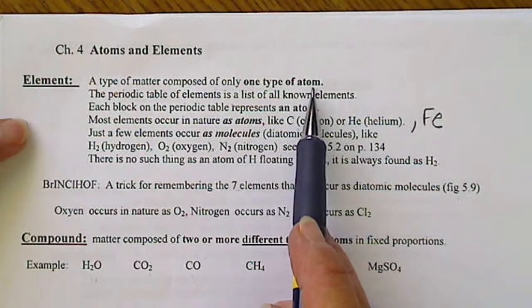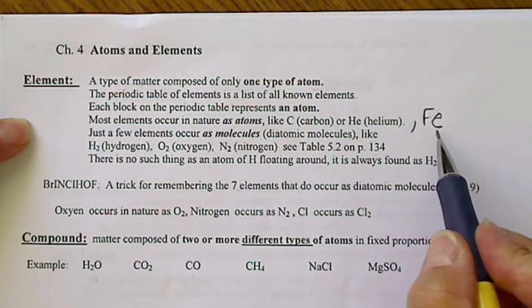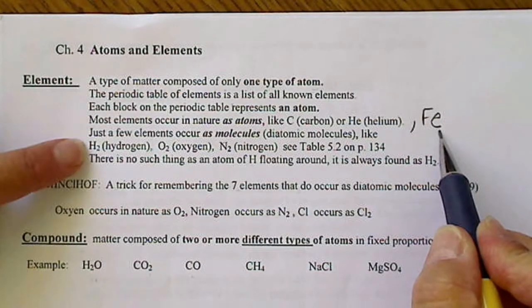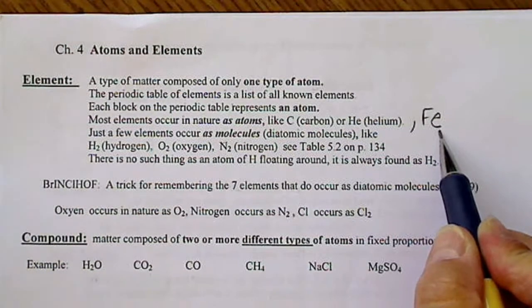And so an atom is not necessarily an element, and an element is not necessarily an atom. Most of the time that is the case, except for these few elements that always occur in twos.